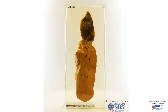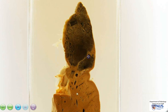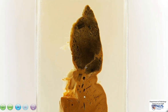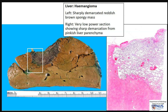Here is another example of a hemangioma. Again, we can see that this is a discrete, sharply demarcated lesion. In this instance it is darker in color, but we can still appreciate this spongy appearance. Microscopically, it is extremely well demarcated from the liver parenchyma, and this spongy appearance is a little bit more apparent. We don't see a lot of blood within the vascular spaces because the red blood cells have actually dropped out as a result of sectioning.